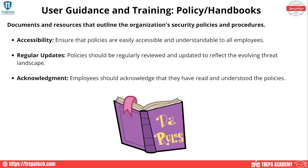Regular updates are important — we have to make sure we have a system in place to review policies, maybe quarterly or biannually, and ensure they're updated to current standards. Then acknowledgement: we should have a system in place to verify that employees actually read it, whether that be a quiz on your internal LMS system or something similar.